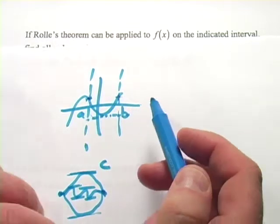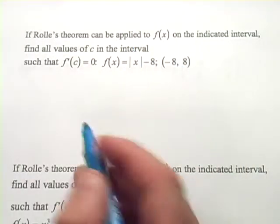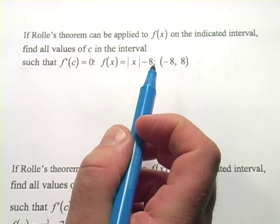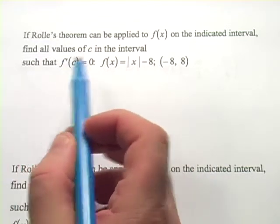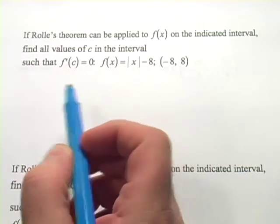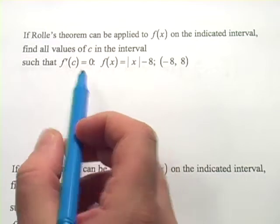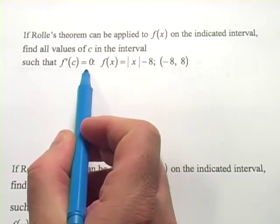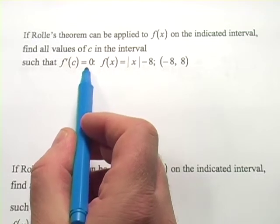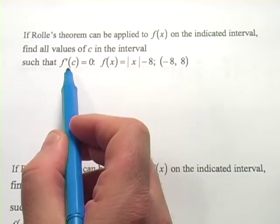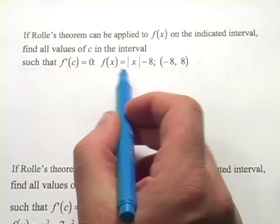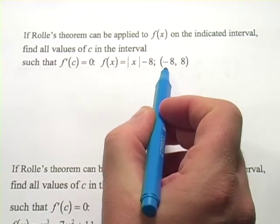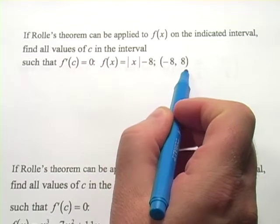Let's look at a couple of problems. This first one says: if Rolle's Theorem can be applied to f of x on the indicated interval, find all the values of c in the interval such that f prime of c equals zero — the slope of the tangent line is zero, same thing as the derivative. We have the function f of x equals the absolute value of x minus eight on the interval from negative eight to eight.